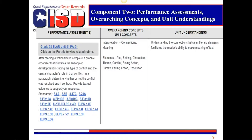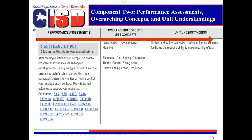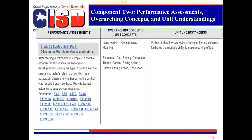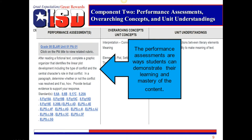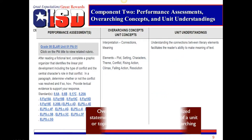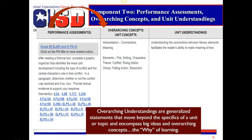Component 2 is comprised of the performance assessments, overarching concepts, and unit understandings. This component provides a big picture for student expectations and learning outcomes. This table should be read vertically to thoroughly understand the big picture of student outcomes. Reading the first performance assessment on this example, we see that after reading a fictional text, students are expected to complete a graphic organizer that identifies the linear plot development, including the type of conflict and the central character's role in that conflict, determine whether or not the conflict was resolved and if so how, and provide textual evidence to support their response. If students have mastered all of the content objectives within this performance assessment, then the students have a strong understanding of the overarching and unit concepts. In this example, students will have demonstrated their understanding of elements, theme, conflicts, and so on within fiction.